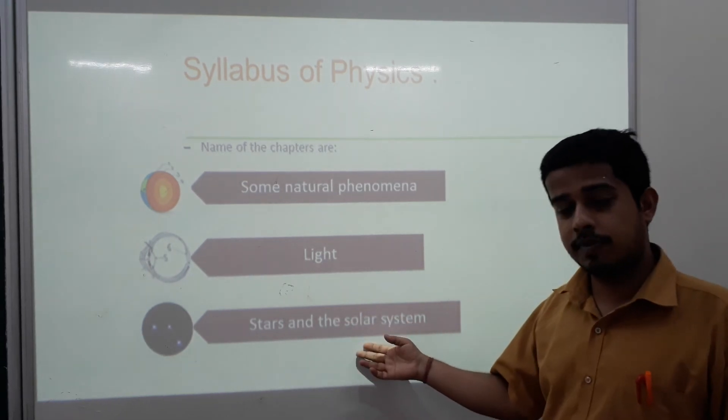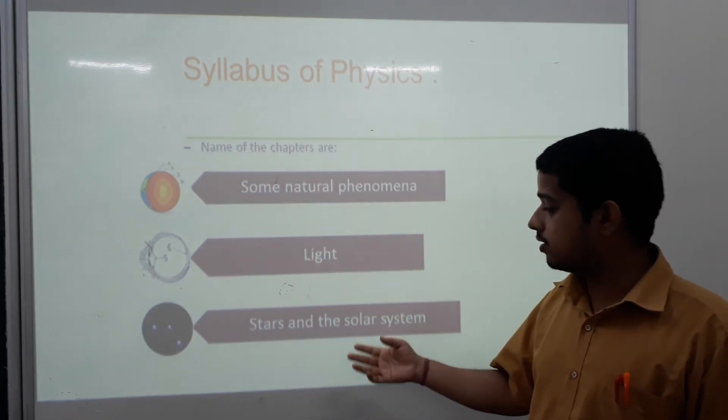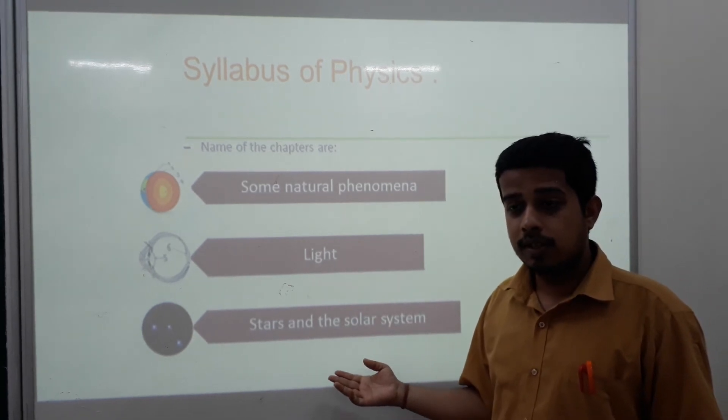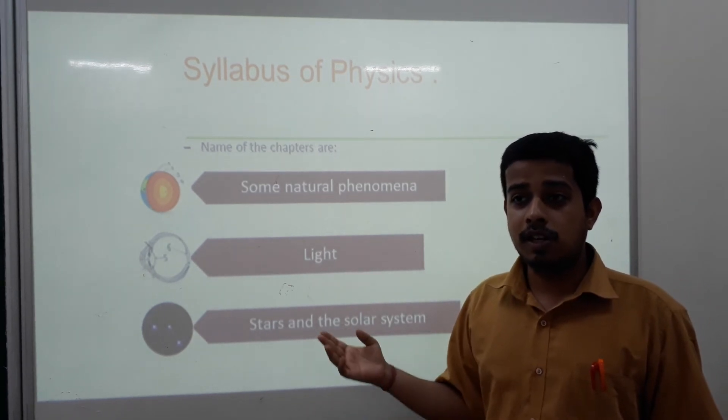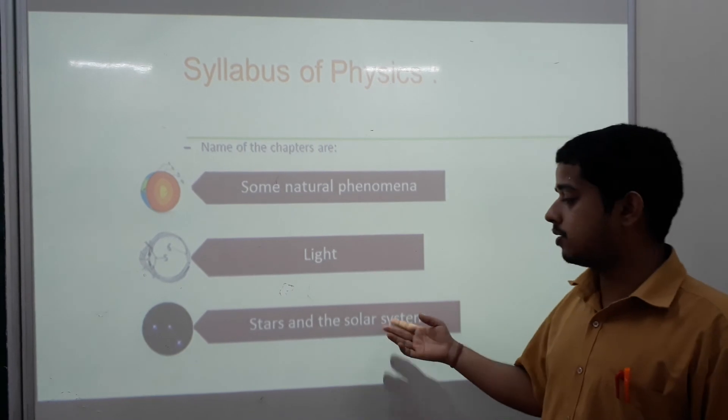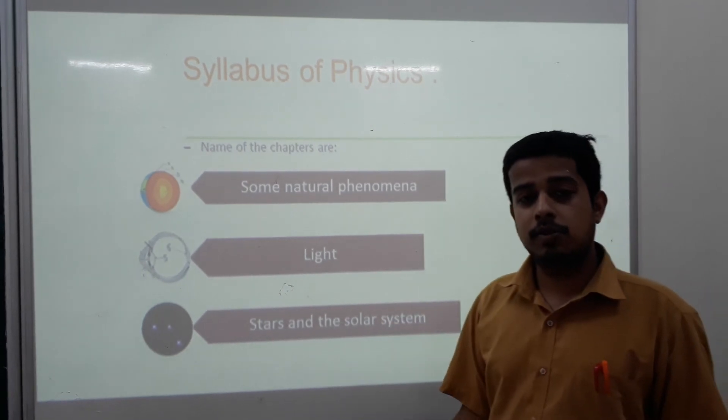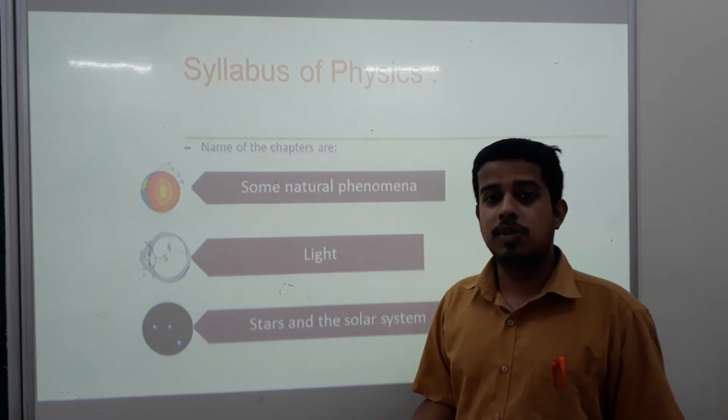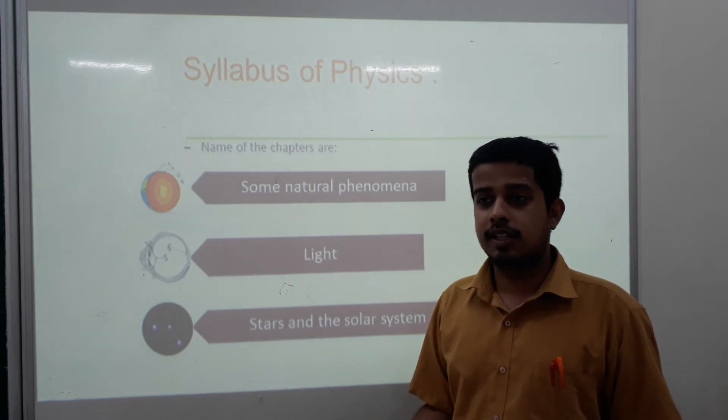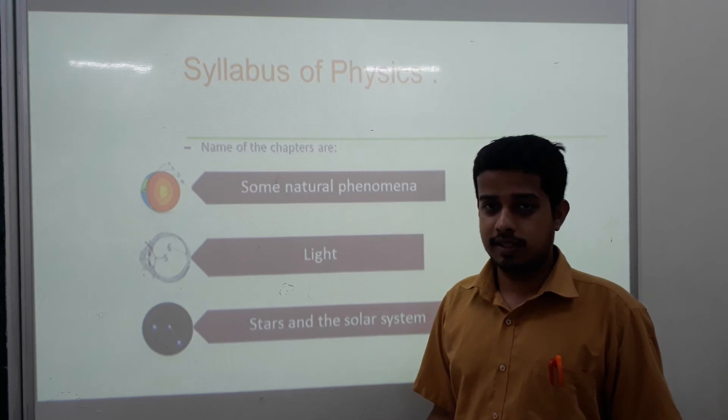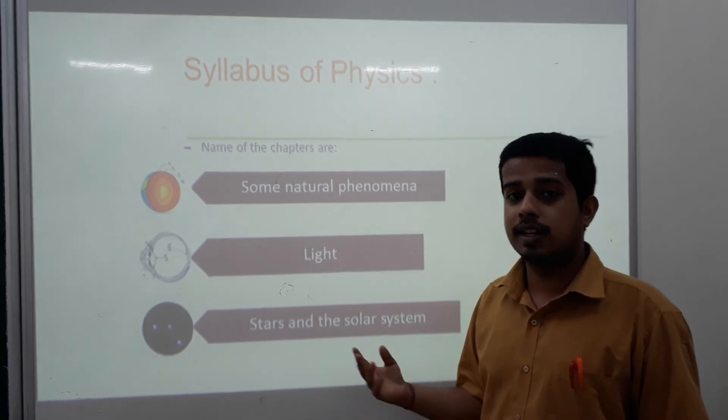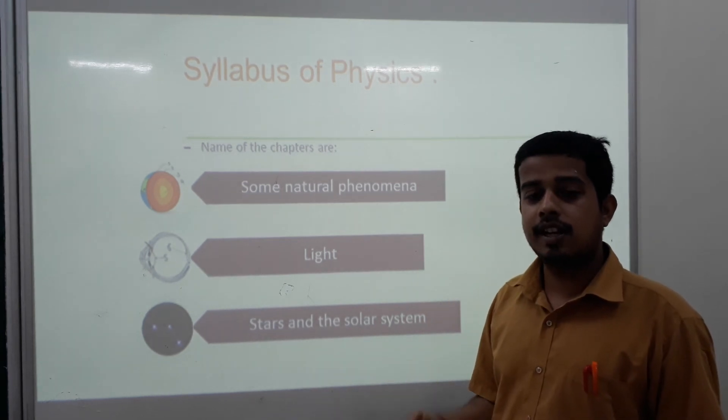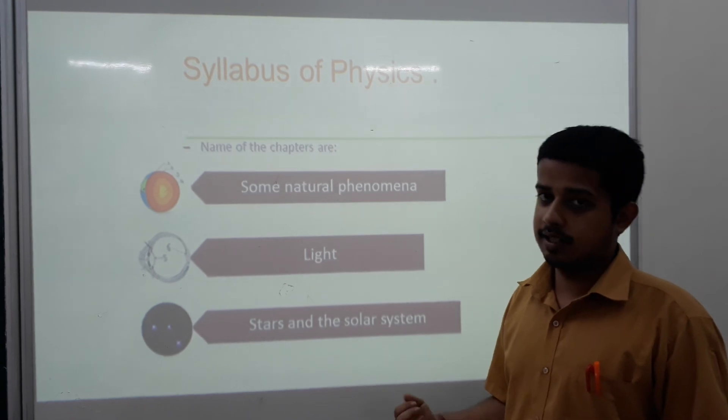And the last chapter of your syllabus is Stars and the Solar System. In this chapter, we not only learn about the planets of our solar system, but also we will learn about several stars, asteroids, meteors, meteorites, everything about this. We will also learn about satellites, natural satellites, artificial satellites, etc.